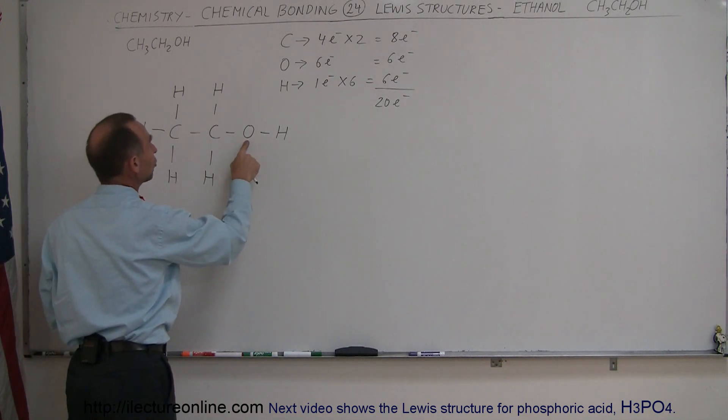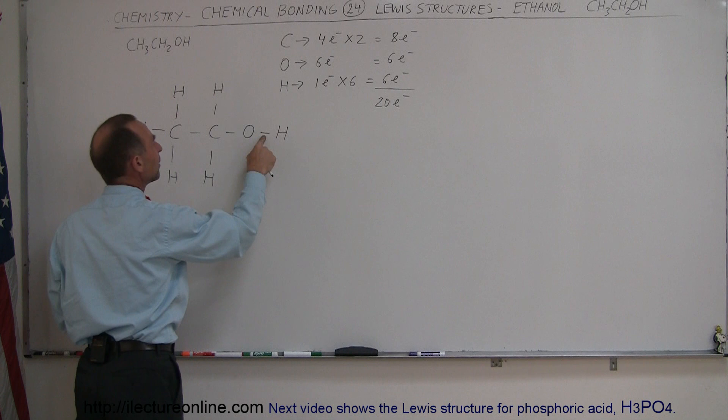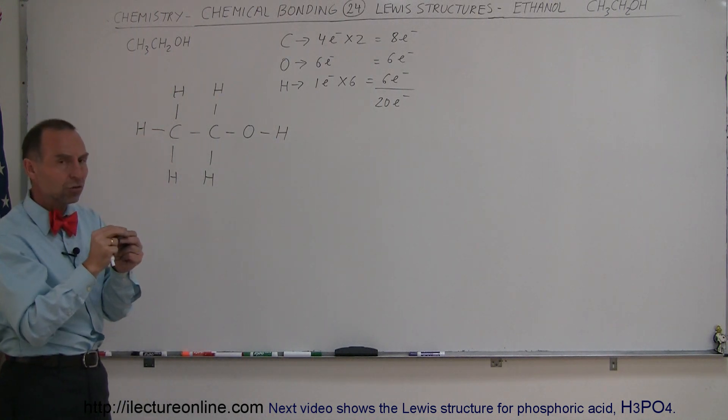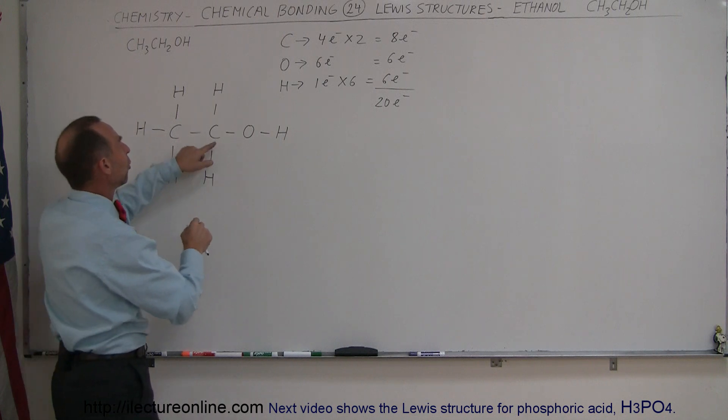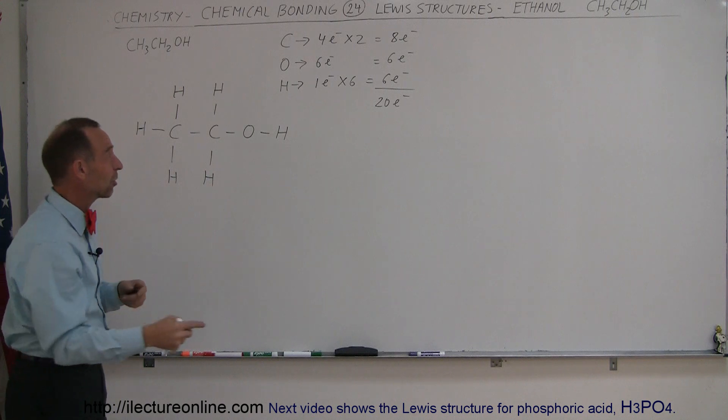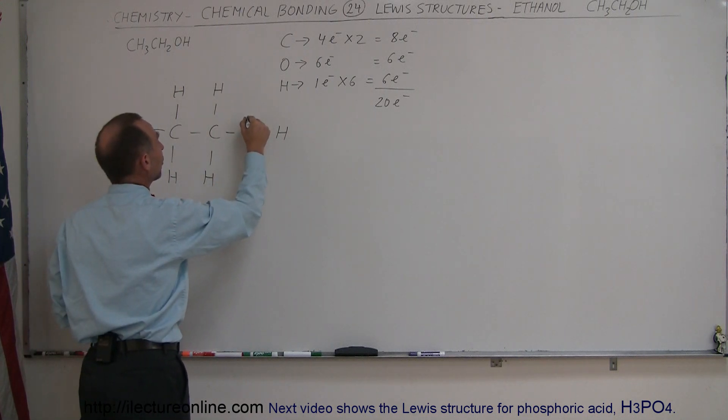Finally, we have an oxygen that made a bond here and a bond there. That takes care of four electrons: two from the oxygen, one from this carbon, and one from this hydrogen. Which means there should be four more electrons on this oxygen. Let's put two of them over here and two of them over there.